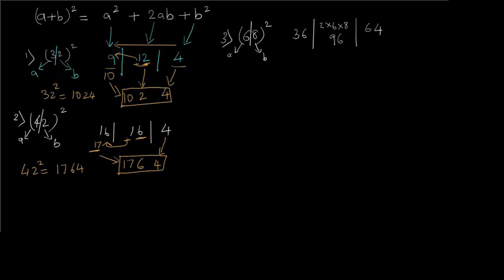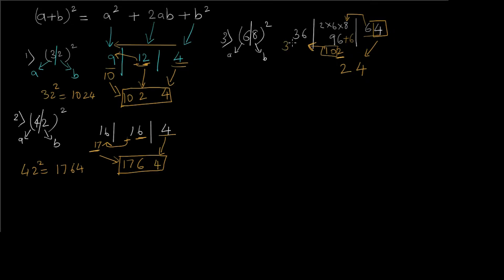To get the final answer, we take the rightmost value from each part. Here the last term has two digits, so we take the rightmost digit 4 and add 6 to the center term: 96 + 6 = 102. Again, we take the rightmost digit 2 and carry 10 to the leftmost term: 36 + 10 = 46, which is written directly. So 68² = 4624.